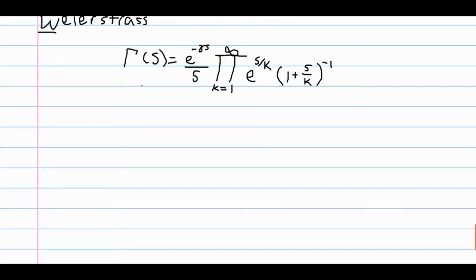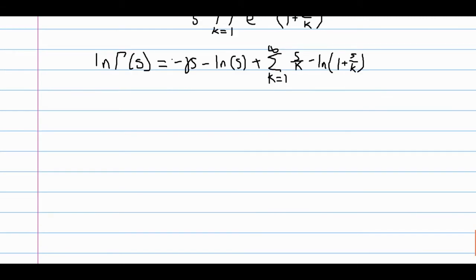What we're going to do is take the natural log on both sides, which is motivated by products and exponentials all over the place. So we will get this equation, and now we just take the derivative on both sides. The left-hand side becomes the digamma function, and we get negative gamma minus 1 over s.